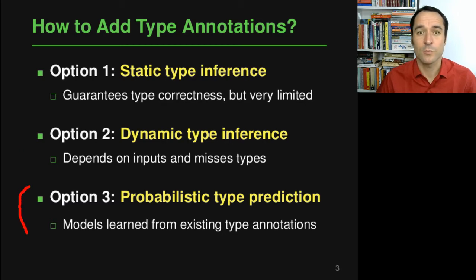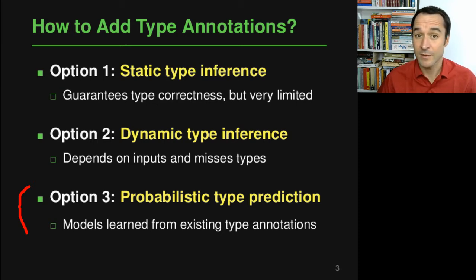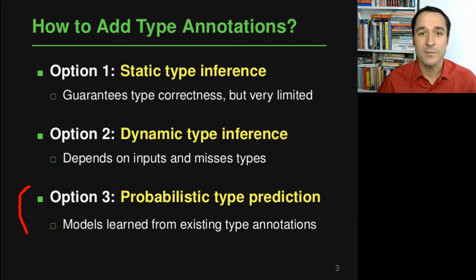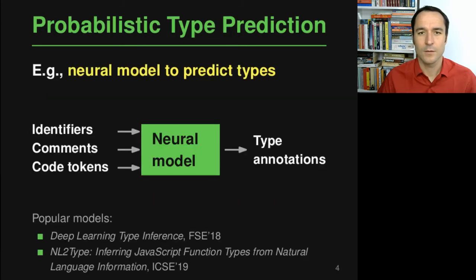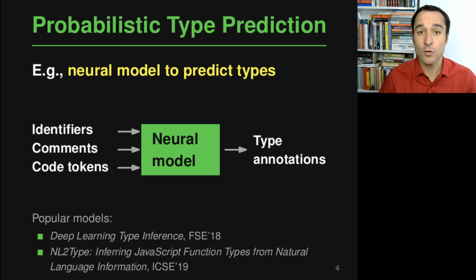Option three — and this is what we use here — is probabilistic type prediction, where you have a model that learns from existing type annotations in some part of the code base and then predicts more types to add to your program. One popular way of doing probabilistic type prediction is neural models that look at the source code and pieces of information in it to suggest type annotations.